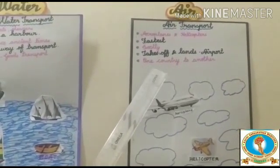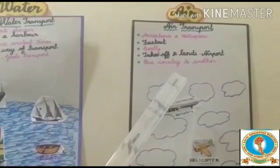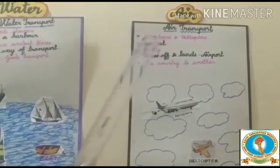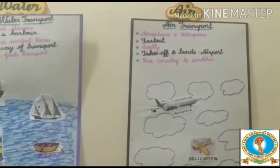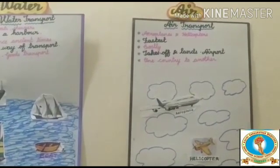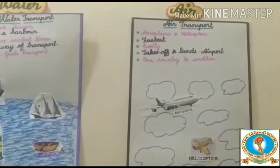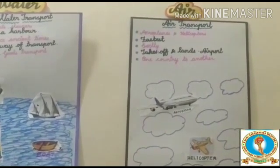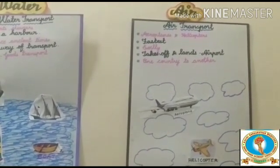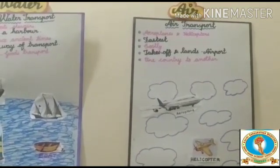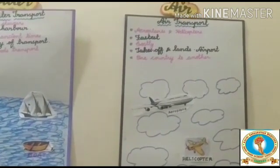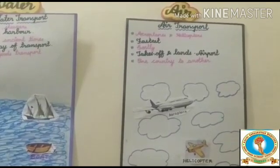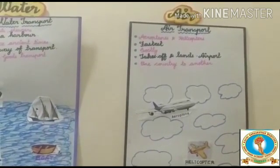An aeroplane always takes off and lands at an airport. Air transport can be used to travel from one country to another. There are two types of airways: domestic airways and international airways. Domestic airways operate within the country, while international airways connect different countries to each other.